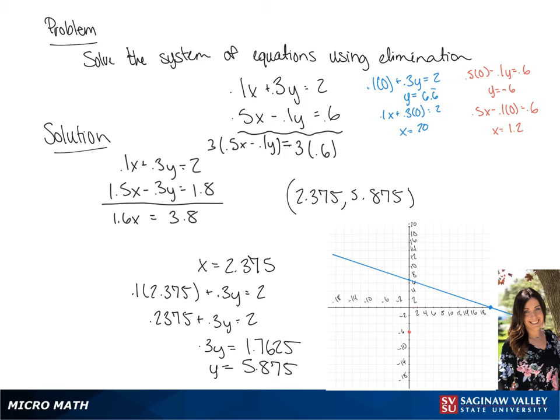And draw our line. And we see where these two lines intersect. It's at 2.375, 5.875.